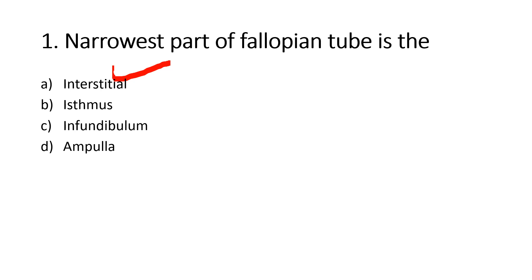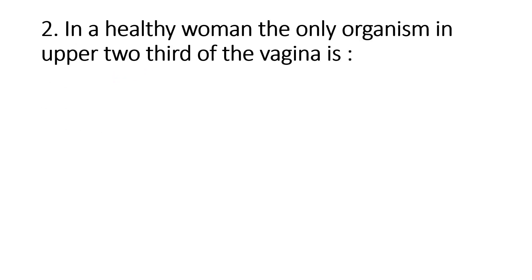The parts of the fallopian tube are: intramural or interstitial, isthmus, ampulla, and infundibulum. The interstitial part is the narrowest part, located within the uterine wall. Its length is 1.25 cm and diameter is 1 mm. The ampulla is the longest part and is the site of fertilization.